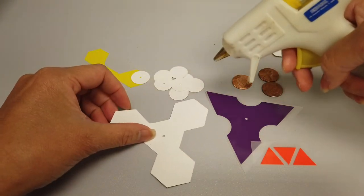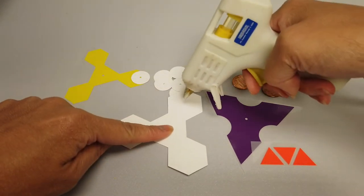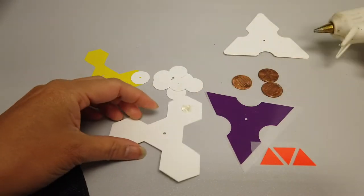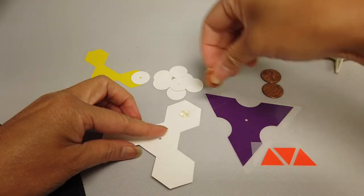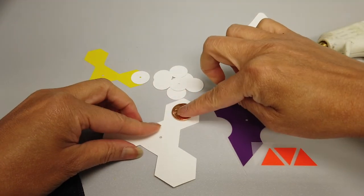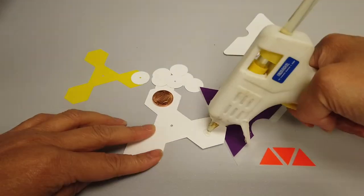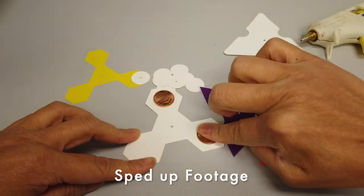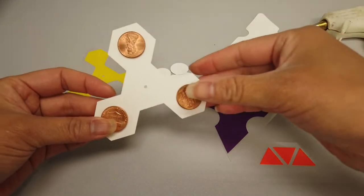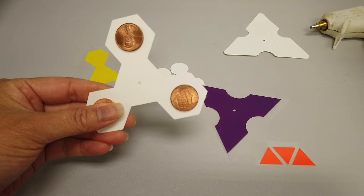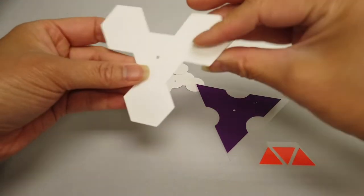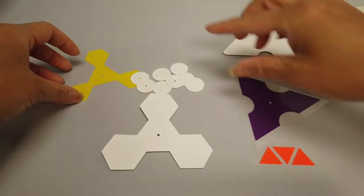So the first thing that I'm going to do is glue these pennies on. I'm just going to put a dot of glue.